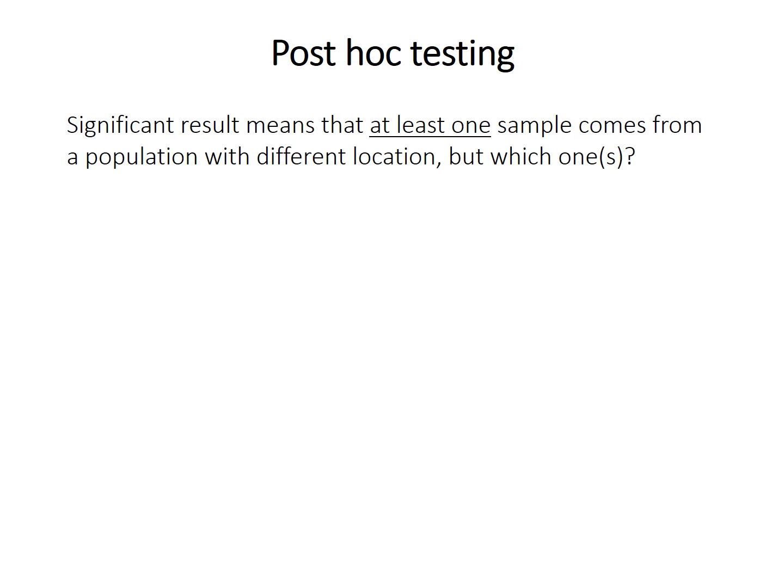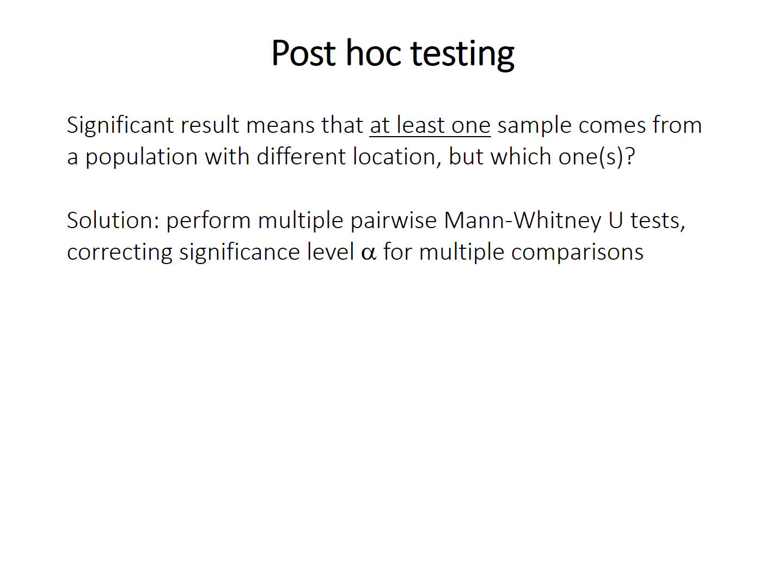If you get a significant result from a Kruskal-Wallis test, that means at least one of the samples comes from a population with a significantly different location. But which one or ones? There's no specific post-hoc test — nothing like the Tukey test for ANOVA — but you can perform multiple pairwise Mann-Whitney U tests, making sure to correct the significance level for multiple comparisons. Remember that multiple comparisons increase the chance that at least one is a type 1 error.